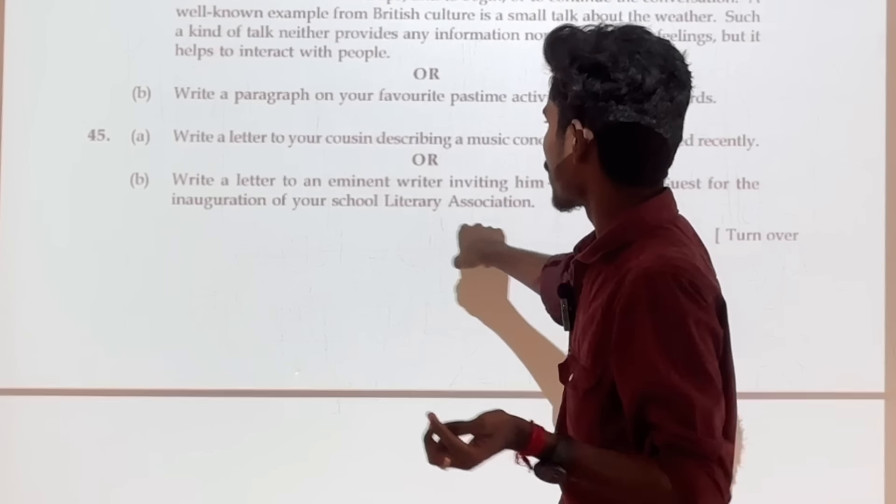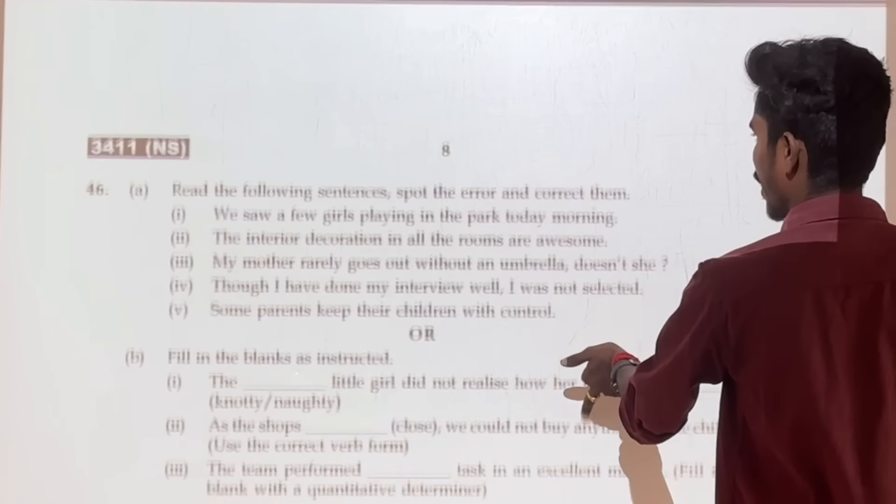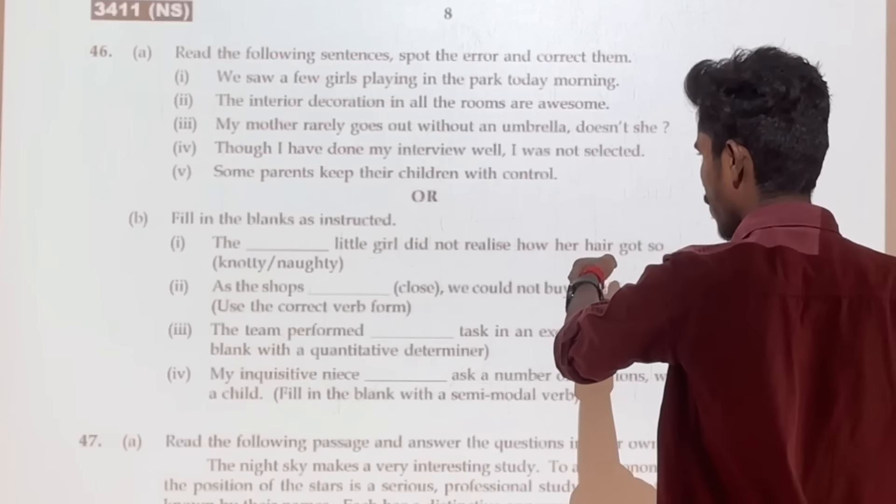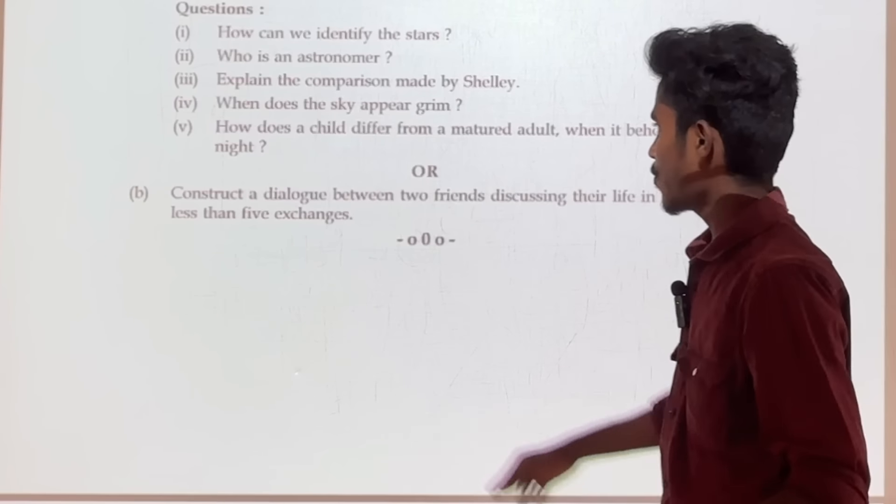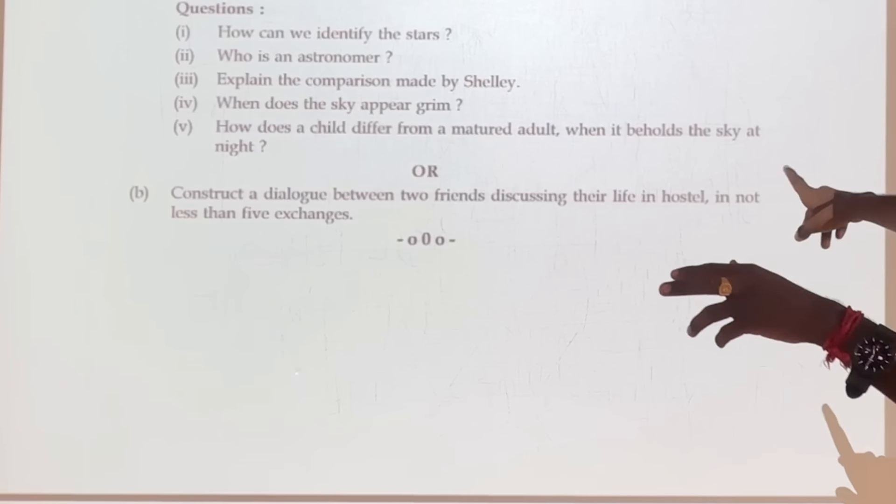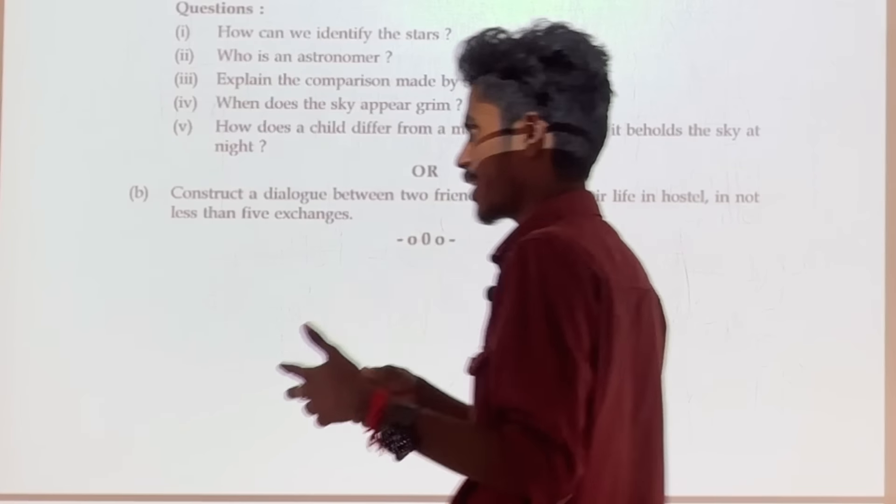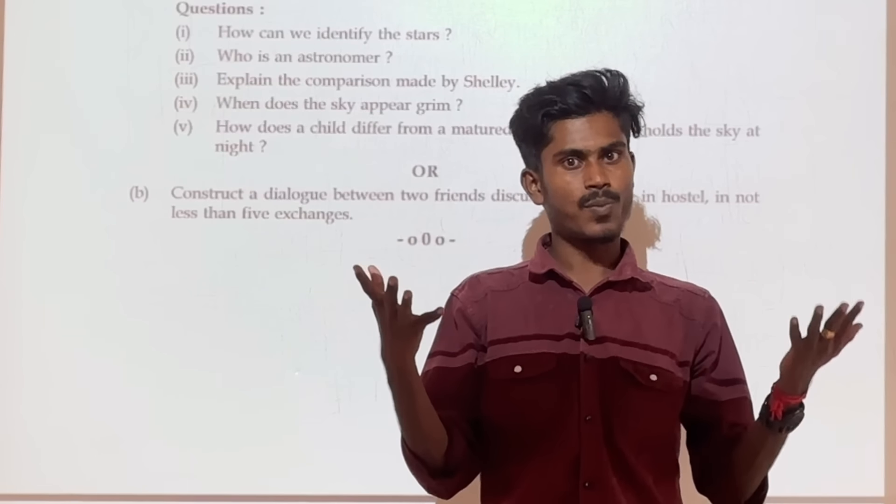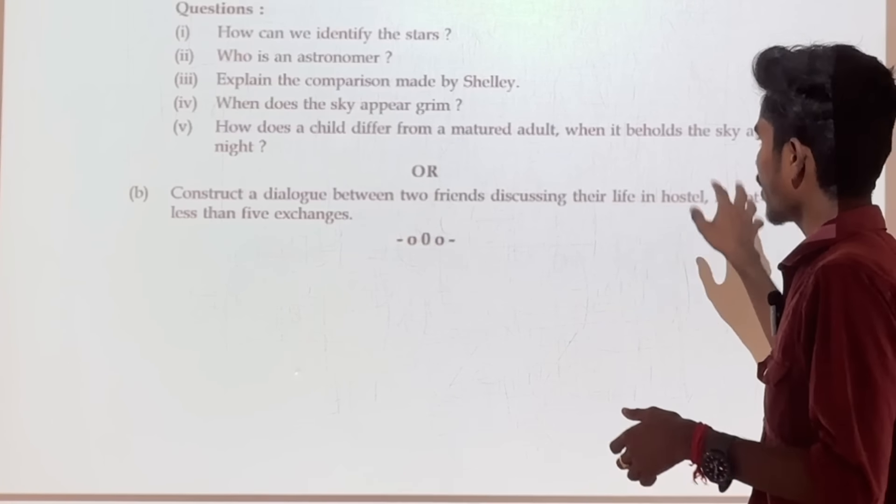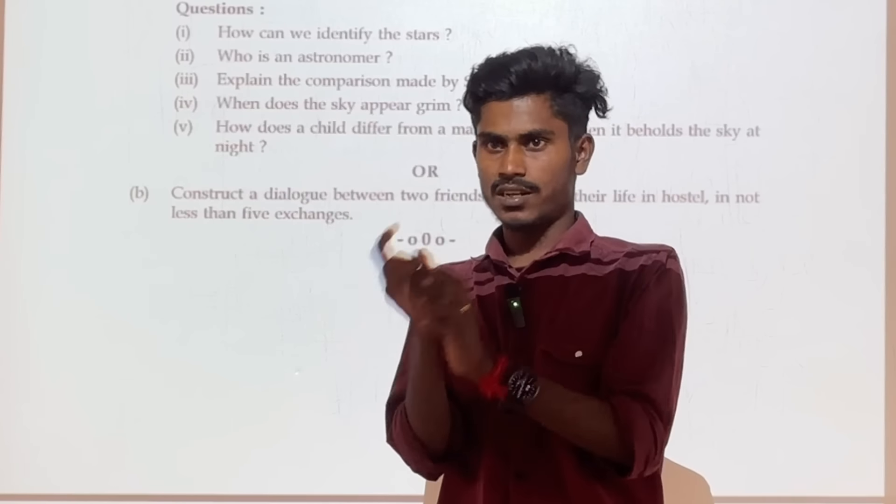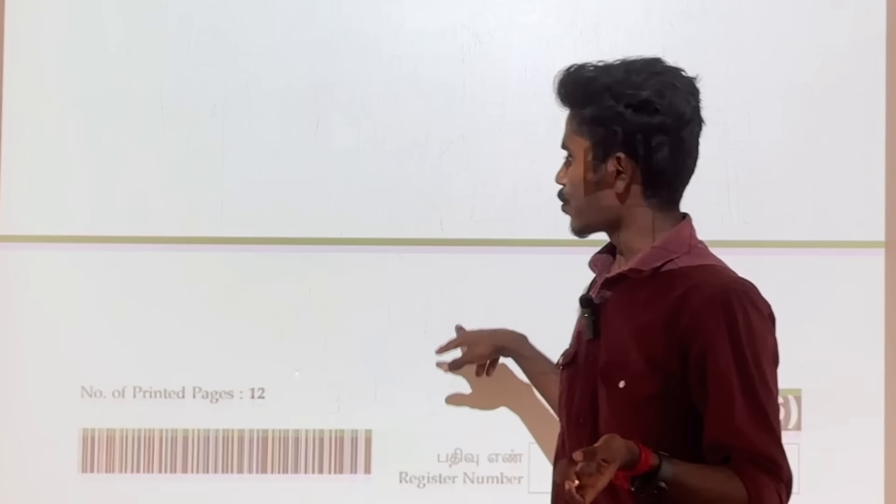Letter writing, music concept letter writing school library association, spot error, filling the blanks, read the following passage. Construct a dialogue between two friends discussing their life in hostel in not less than five exchanges. That's why they are in hostel friends who are in hostel. If you are in school or college then you go to hostel, then you can share your life. So that's why minimum five point, that's five exchanges. So this is the question paper.